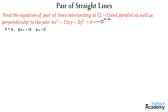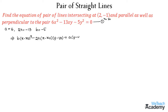We already know that the equation of a line perpendicular to the given pair is given by the formula: b(x - x0)² - 2h(x - x0)(y - y0) + a(y - y0)² = 0.